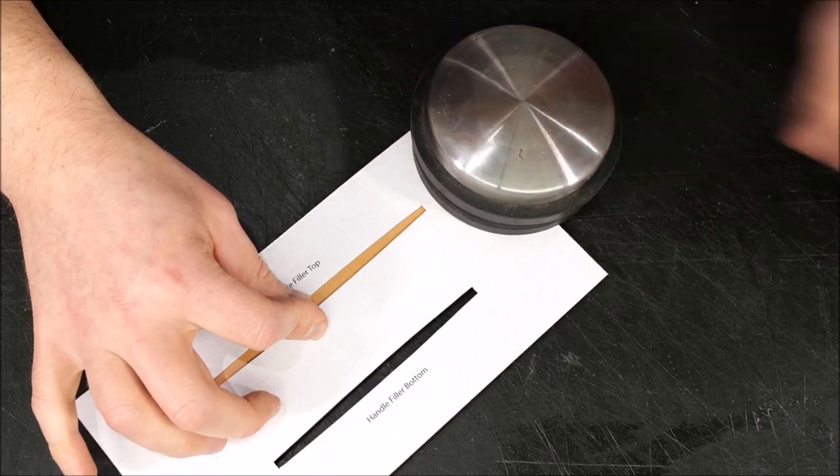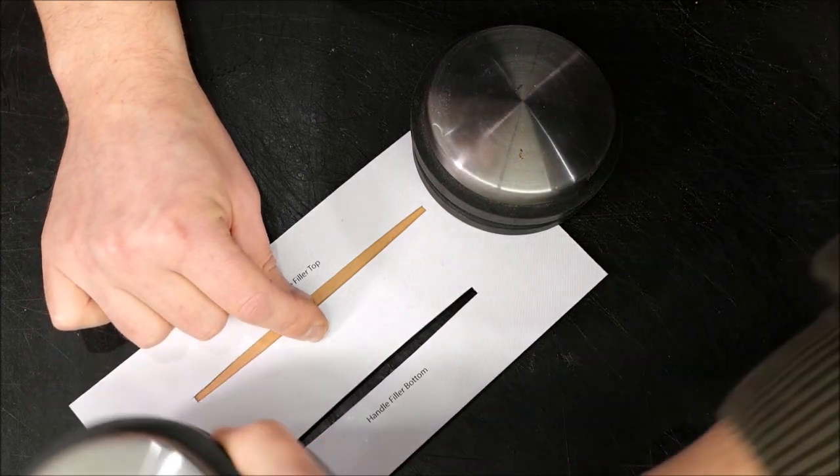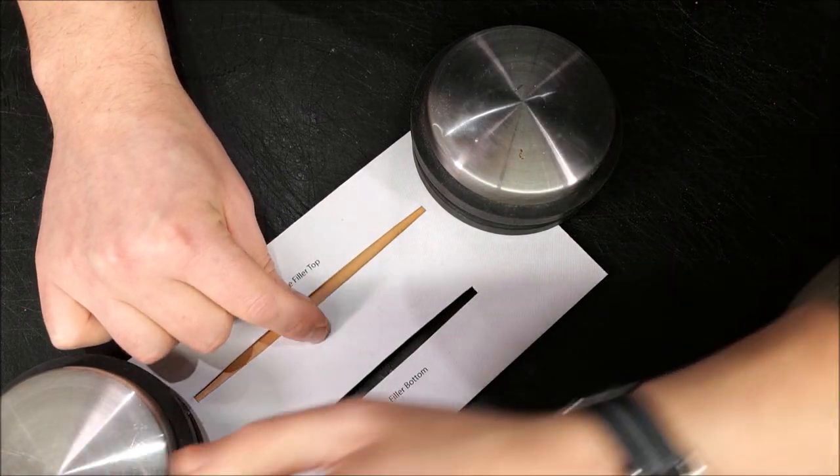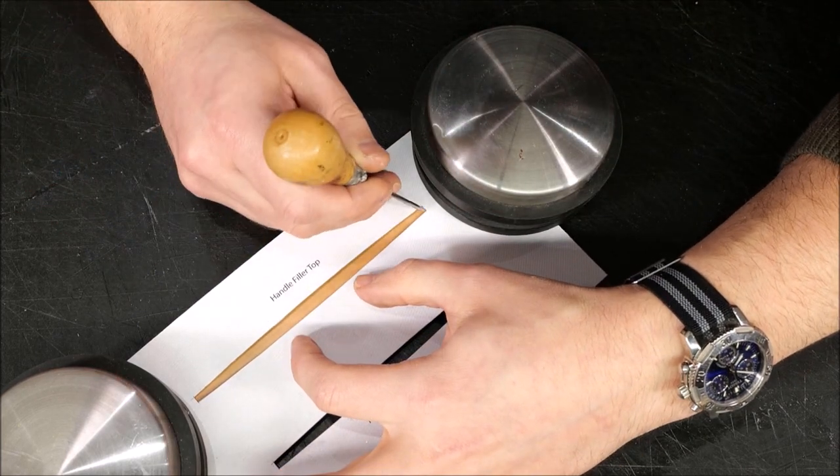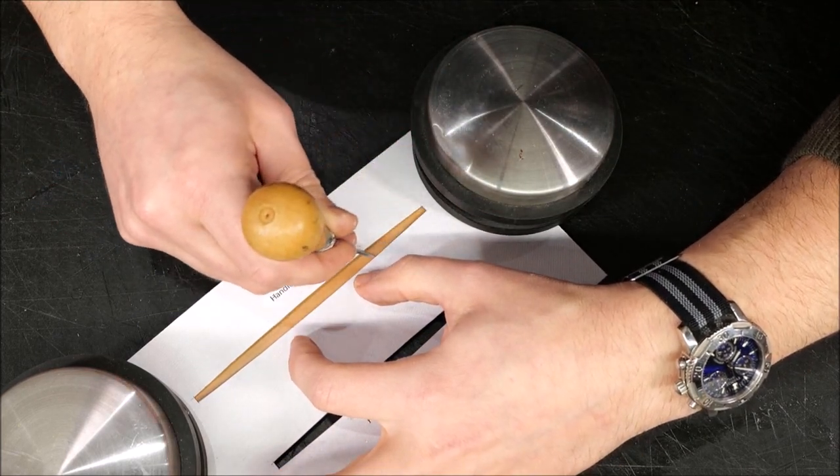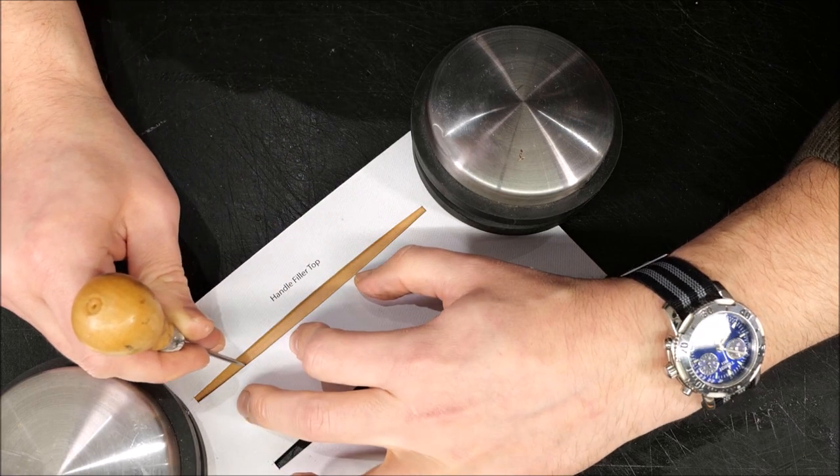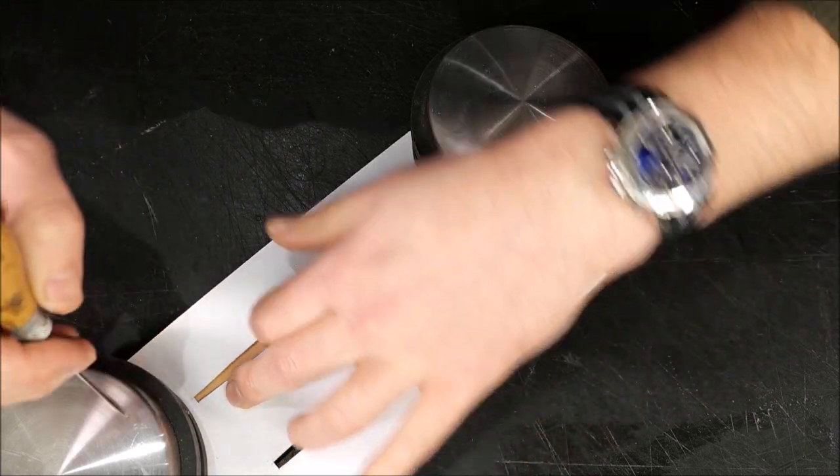Once you've centralized, just place a pattern weight down on each end to hold everything together. And now keeping the pattern down, I'm going to take a scratch awl and go around the internal perimeter.